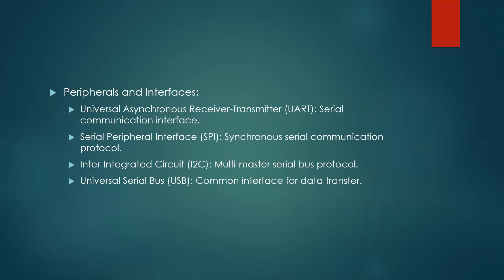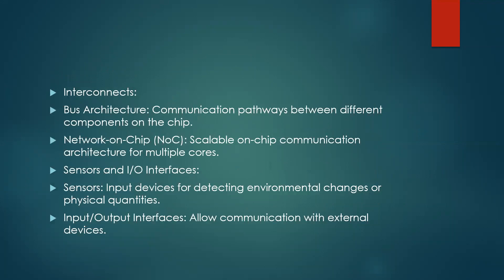Peripherals and interfaces that can be included are: UART (Universal Asynchronous Receiver Transmitter) used for asynchronous serial communication, SPI (Serial Peripheral Interface) for synchronous serial communication, I2C (Inter-Integrated Circuit) protocols, and USB protocol. All these kinds of peripherals can be added to the design. Interconnects include bus architecture as a communication pathway between different components on the chip, and Network on Chip (NoC) as a scalable on-chip communication architecture for multiple cores. Sensors are used in medical or real-time applications measuring physical quantities like temperature, pressure, and humidity.